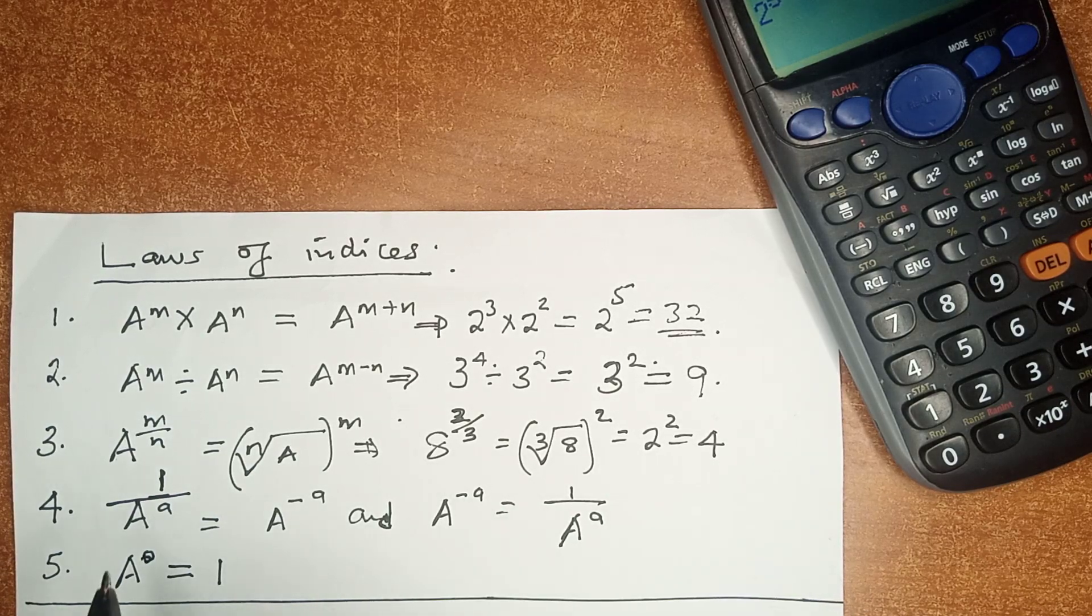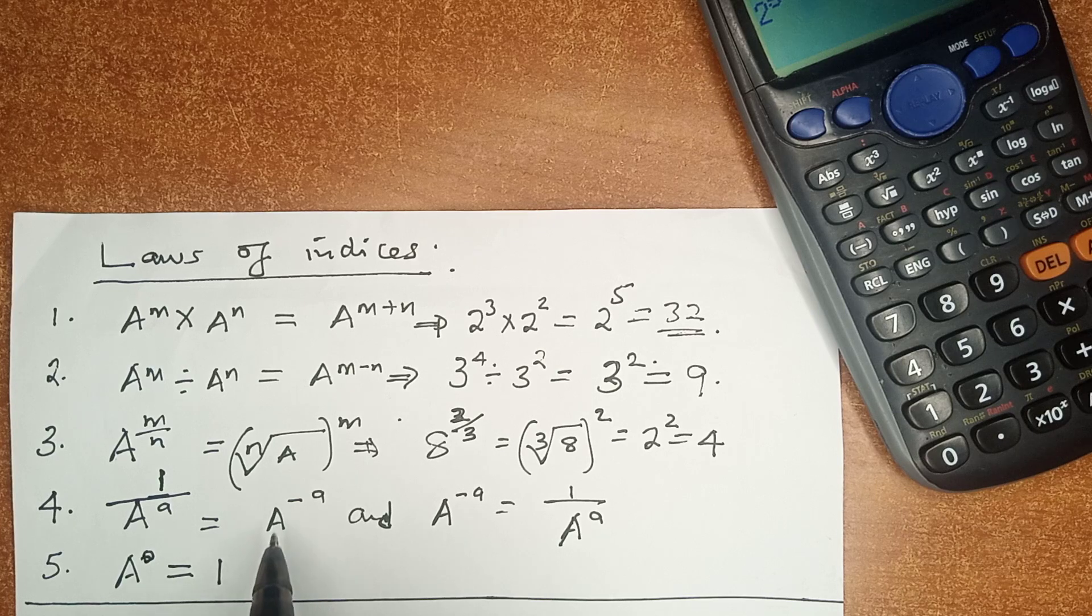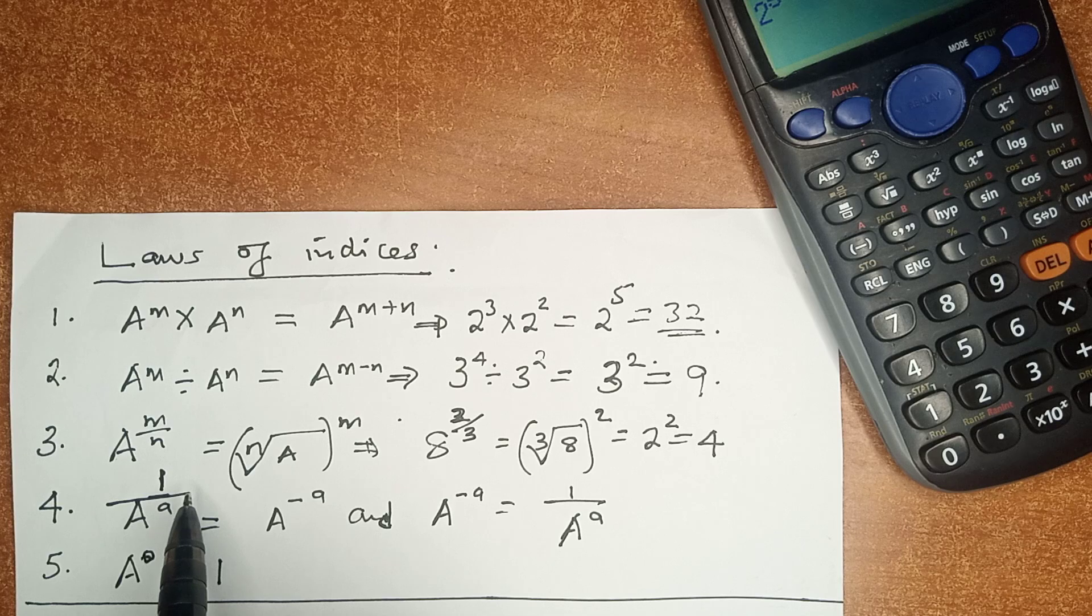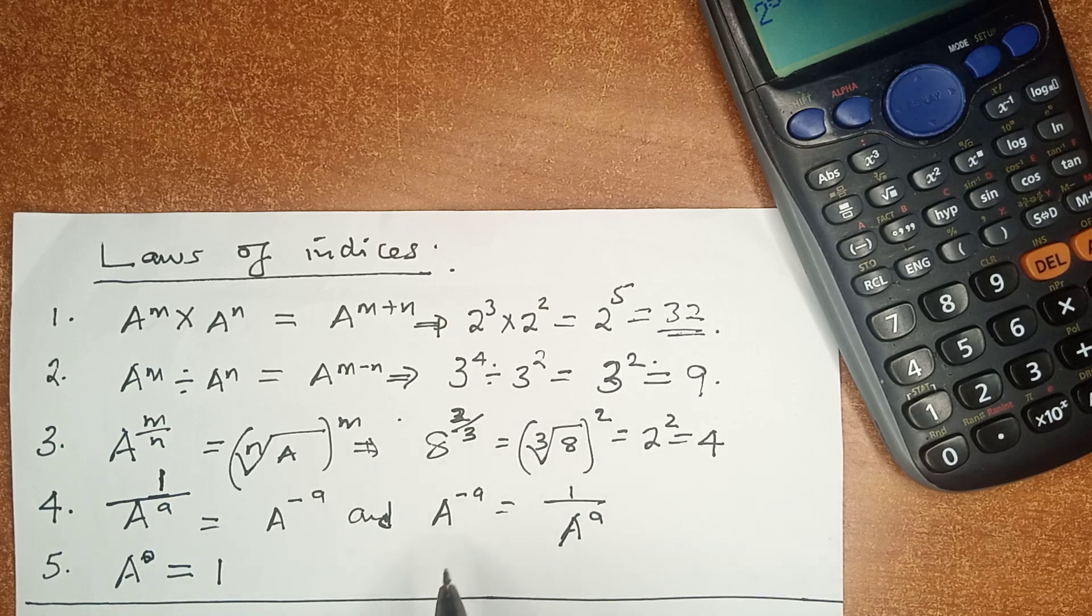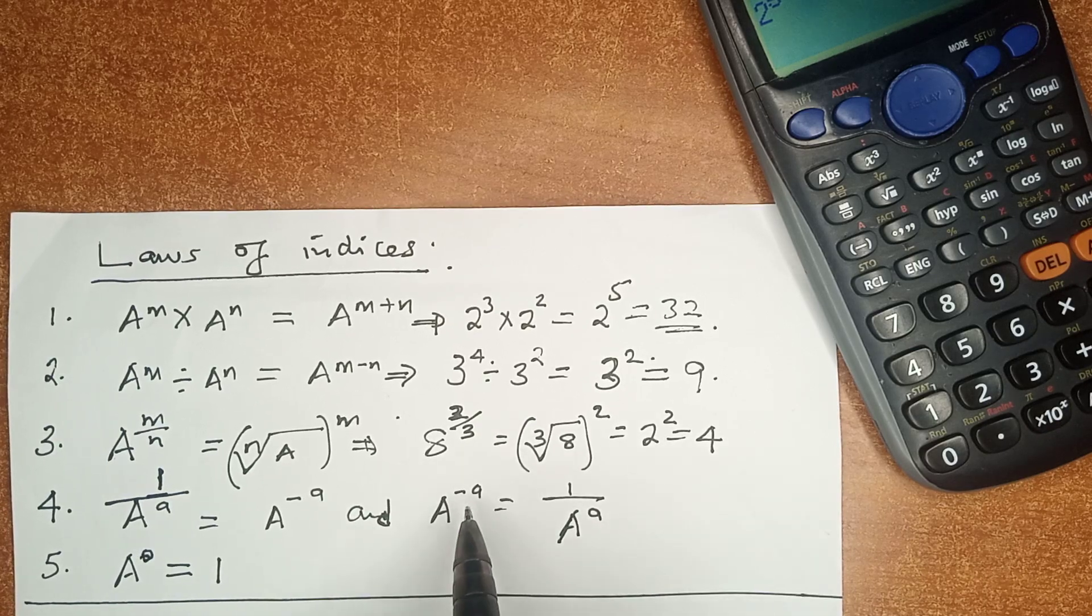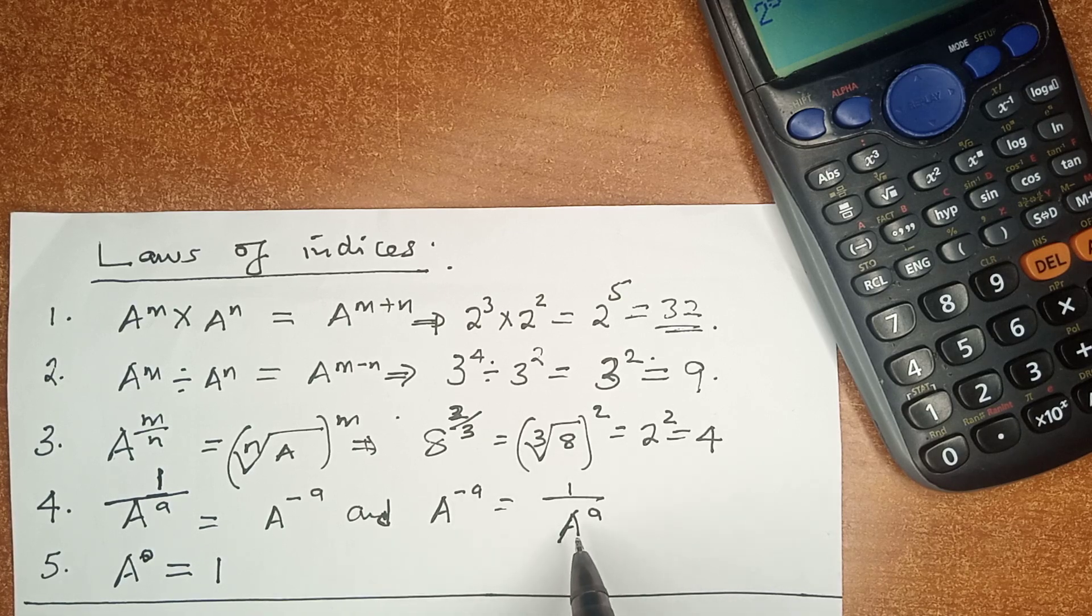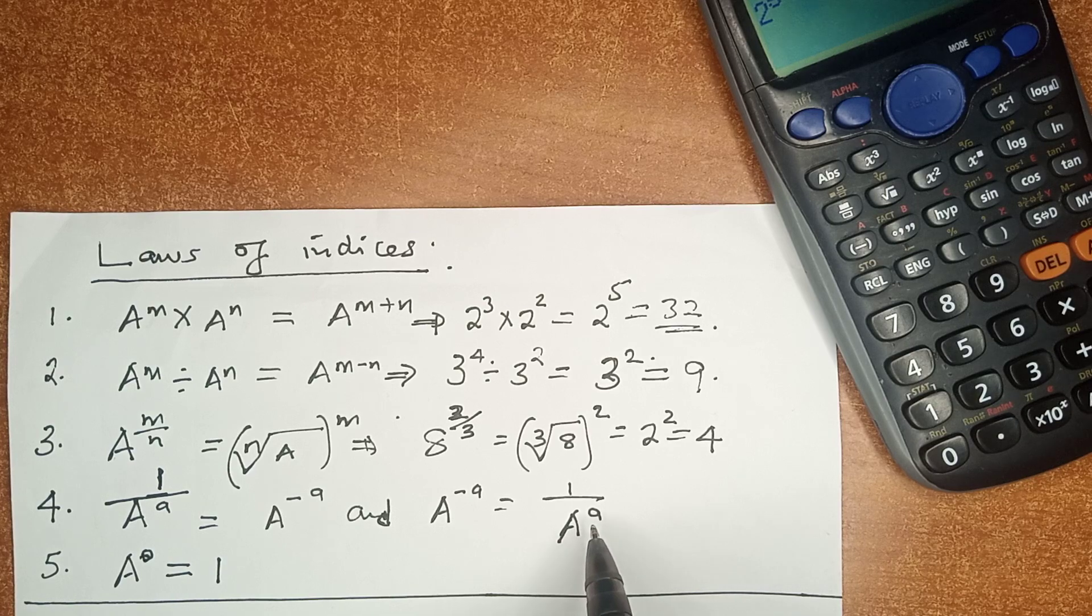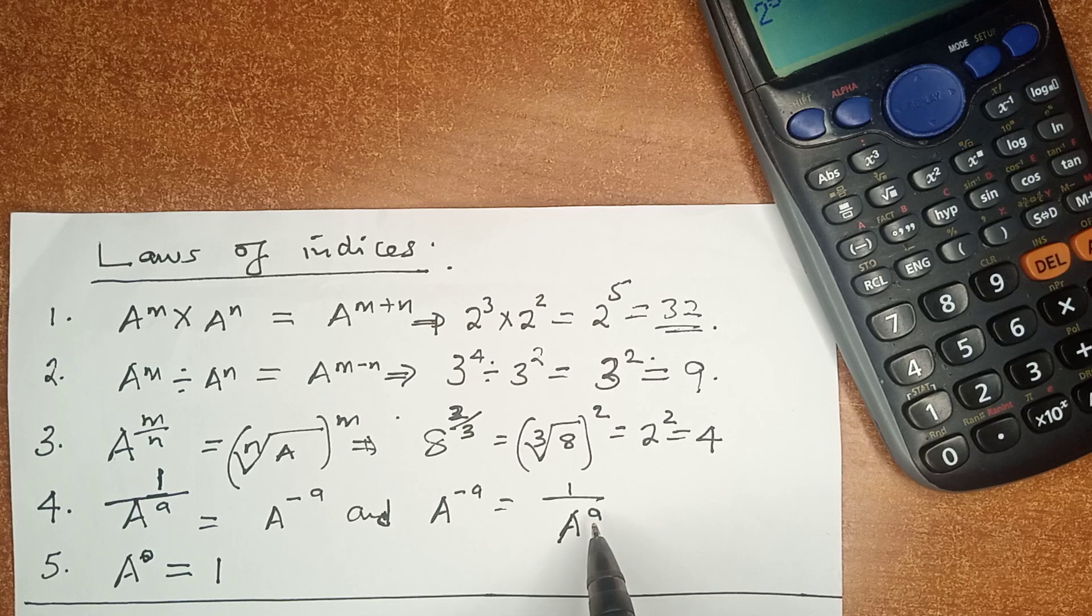Now, the fourth law: when we have 1 over a raised to power a, this is the same as a raised to power negative a. When this a goes now to the numerator position, we talk about the reciprocal, then the sign of the index changes to negative. And the same case happens when we have a raised to power negative a, then this is the same as 1 over a, this time raised to power positive a. Note the reciprocal, the reciprocation changes the sign of the index.